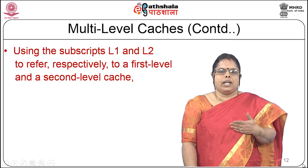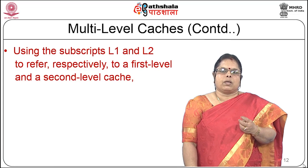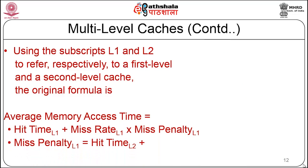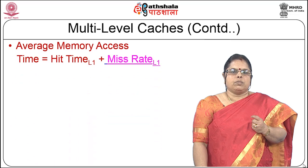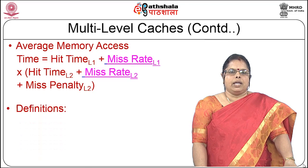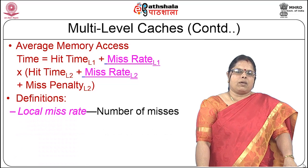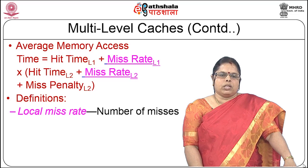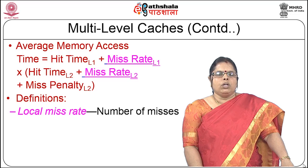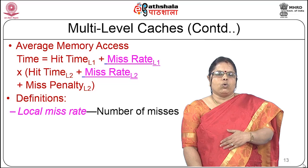Using subscripts L1 and L2 to refer to the first and second level caches respectively, the average memory access time is: hit time L1 plus miss rate L1 multiplied by miss penalty L1, where miss penalty L1 equals hit time L2 plus miss rate L2 multiplied by miss penalty L2. Expanding this, the average memory access time is: hit time L1 plus miss rate L1 multiplied by (hit time L2 plus miss rate L2 multiplied by miss penalty L2). This expression involves the hit times of both caches, the miss rates of both caches, and the miss penalty of L2, which means going to main memory when L2 also misses.